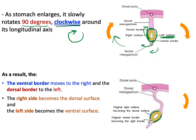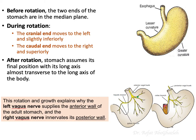Additionally, the ventral border moves to the right, becoming the right side, while the dorsal border moves to the left. This is the rotation of the stomach. What is the significance of this rotation?